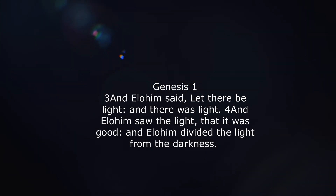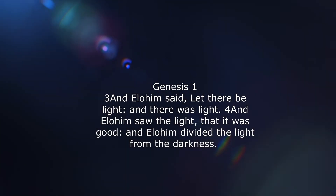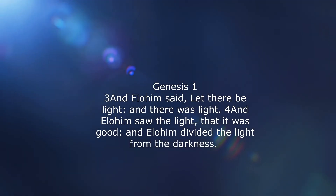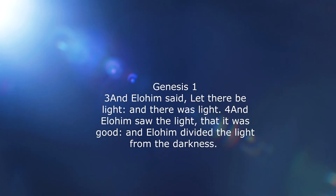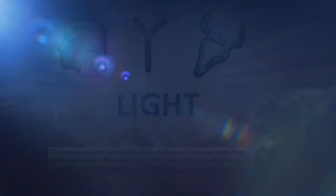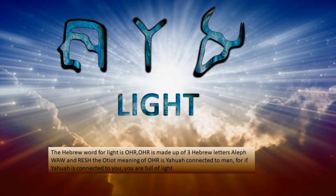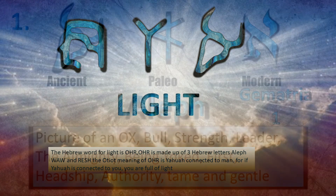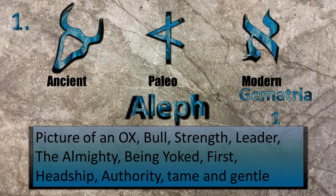Genesis 1: Elohim said let there be light and there was light, and Elohim saw the light that it was good, and Elohim divided the light from the darkness. The Hebrew word for light is 'Or,' and it is made up of three Hebrew letters: Aleph, Vav, and Resh. Aleph is a picture of an ox — it means strength and leader, the Almighty, being yoked, first. It is a letter that means Yahuwah.